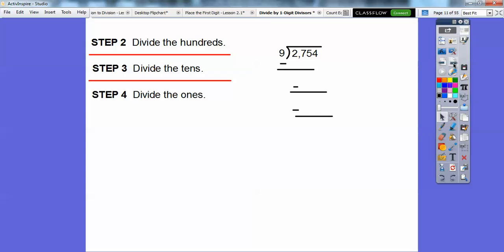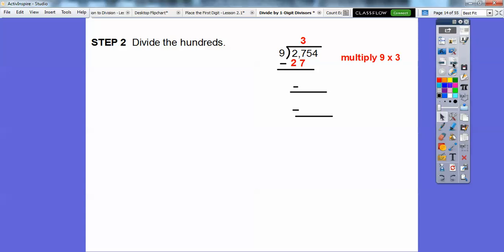So here we got it set up. Here's the steps. We're going to divide the hundreds, then divide the tens, then divide the ones. Let's do one thing at a time. Let's divide the hundreds. So 9 goes into 27 three times, then we multiply 9 times 3 is 27. We subtract, we get 0. We bring down the next number, which is 5.